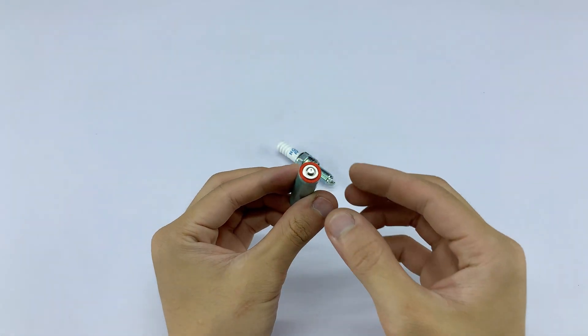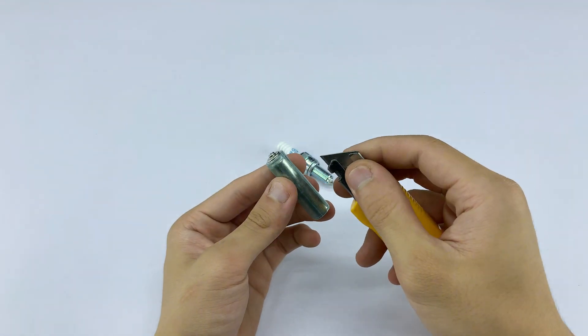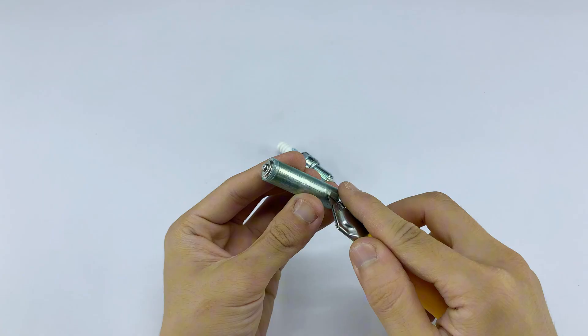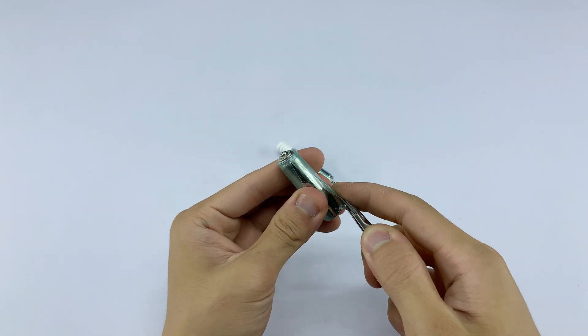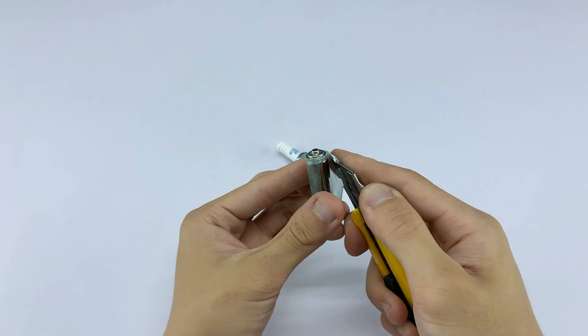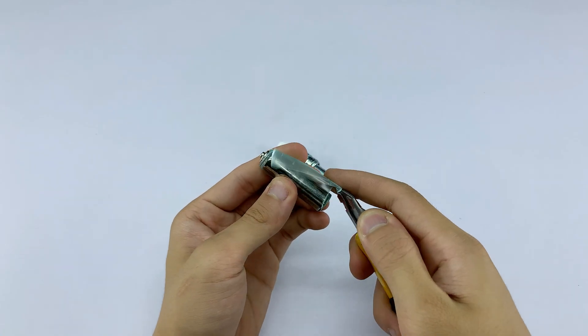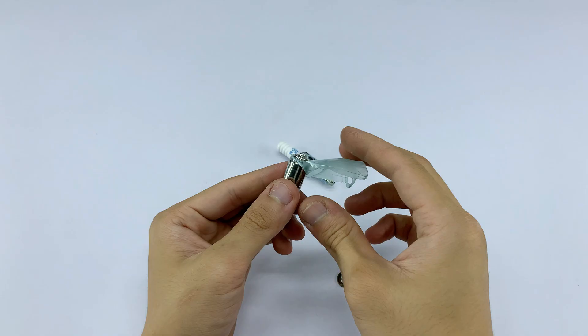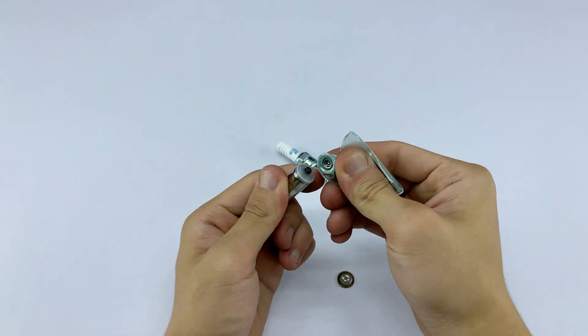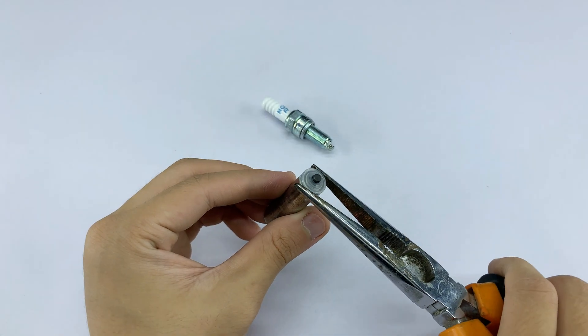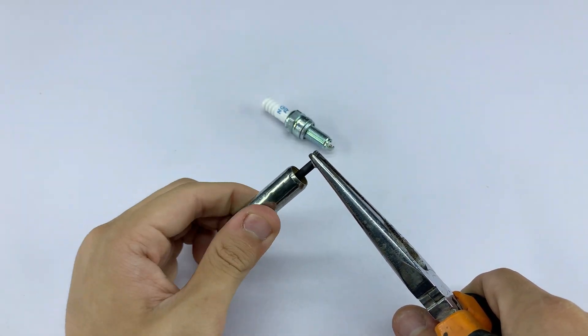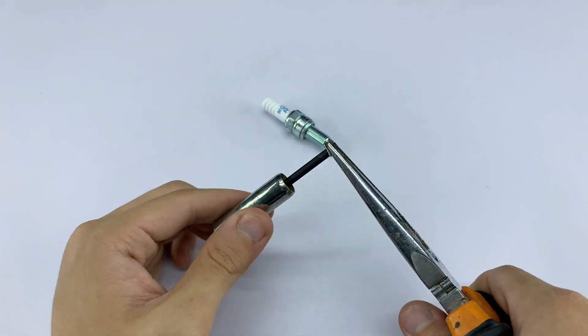When I was a kid, I remember taking apart an AA battery, just out of pure curiosity to see what was inside. Back then, I didn't understand a thing about circuits or electricity. To me, it was like holding a tiny treasure waiting to be discovered. Of course, my little experiment ended with a long lecture from my mom, but looking back, it was worth it. Even something as small as this battery holds its own little secrets.